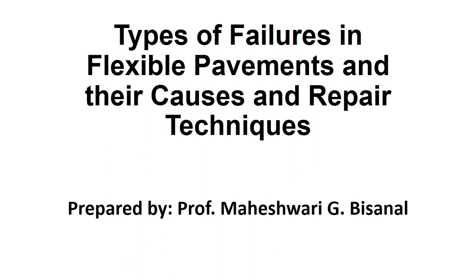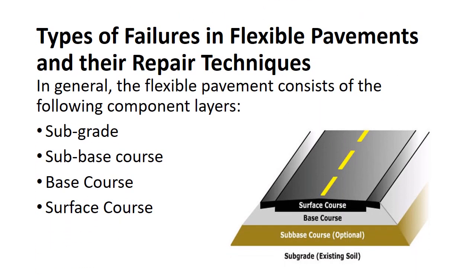Welcome back. Today's topic is types of failures in flexible pavement and their causes and repair techniques. Failures in flexible pavement can be due to the failure of its component layers, which undergo distress due to various causes. In general, the flexible pavement consists of the following component layers: subgrade, subbase, base, and surface course. Instability in any of the layers will result in complete failure of the pavement system, making it necessary to construct each layer with utmost care and precision.